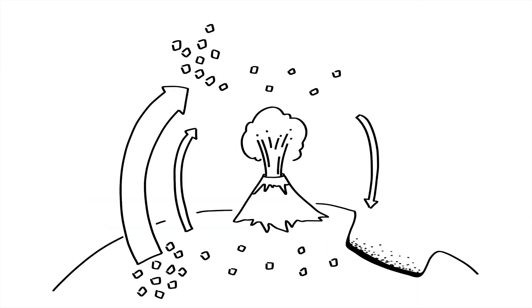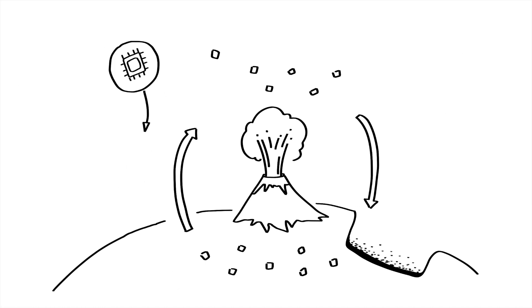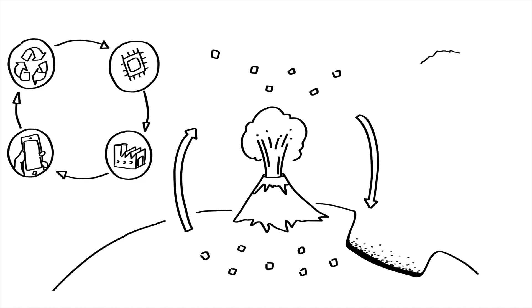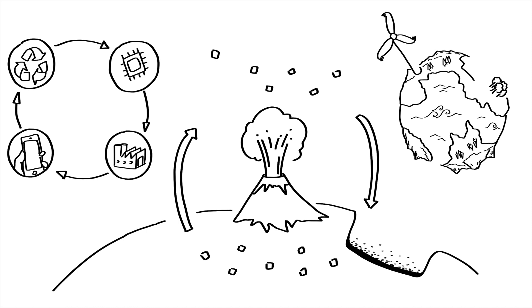For your iPhone to not contribute to systematically increasing concentrations of substances extracted from the earth's crust, materials would have to be kept in a technical loop so they don't build up in nature, and materials would have to be produced with energy that does not involve the extraction and combustion of fossil fuels at any point in its life cycle.